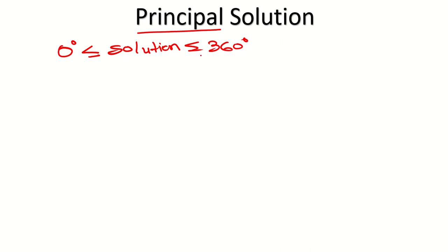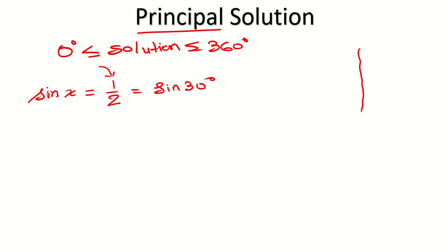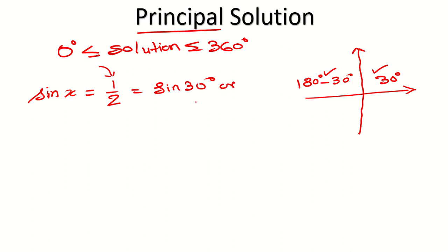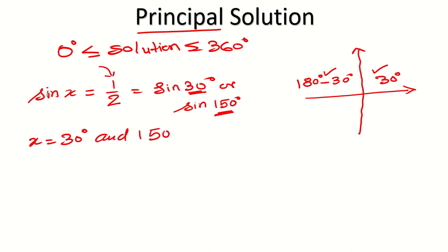All the angles lying between 0 degrees to 360 degrees are called principal solutions. For example, consider sin x equals 1 over 2. For which angle is the value of sin equal to 1 over 2? It is 30 degrees — sin 30 equals 1 by 2, and it is positive. In the quadrant system, sin is positive in the first and second quadrants. So 30 degrees is the first quadrant angle, and 180 minus 30 equals 150 degrees is the second quadrant angle. So the principal solutions are 30 degrees and 150 degrees.